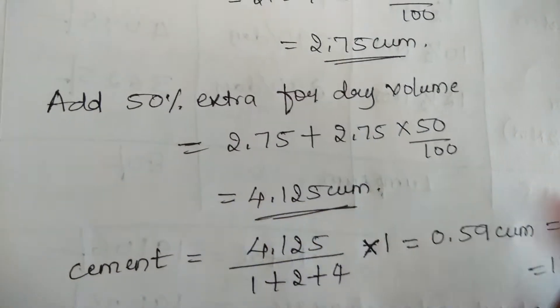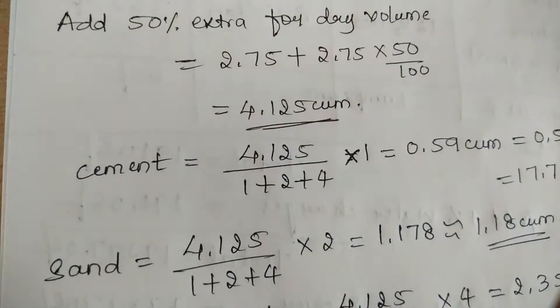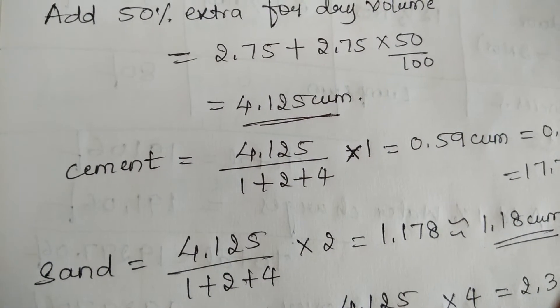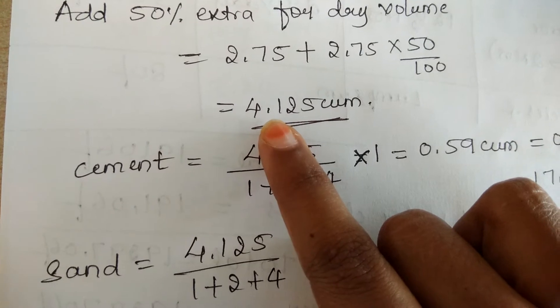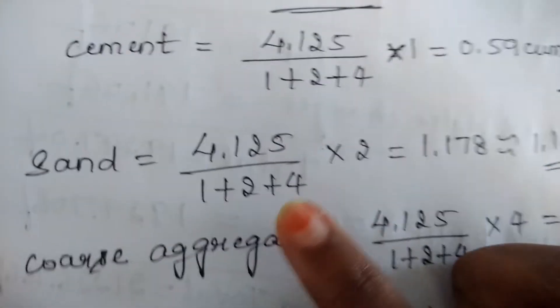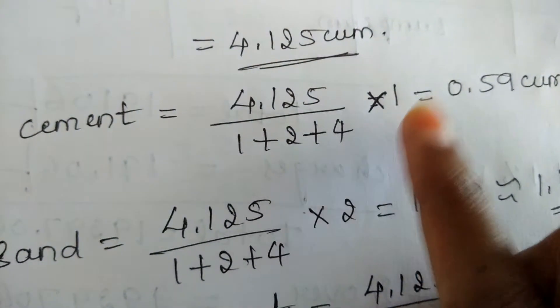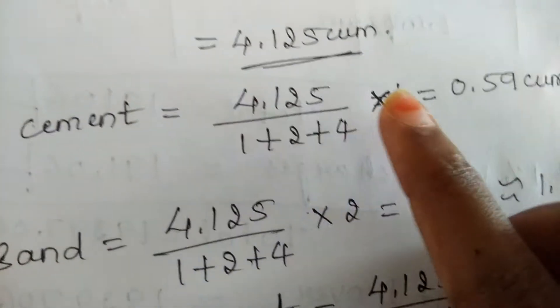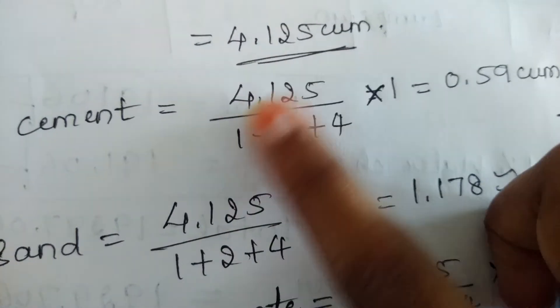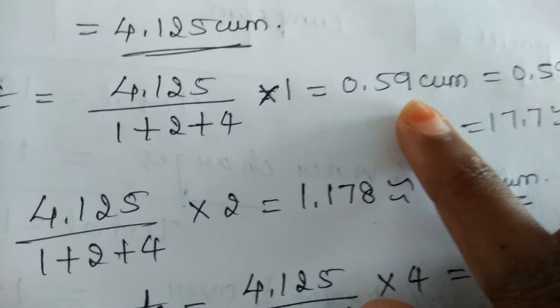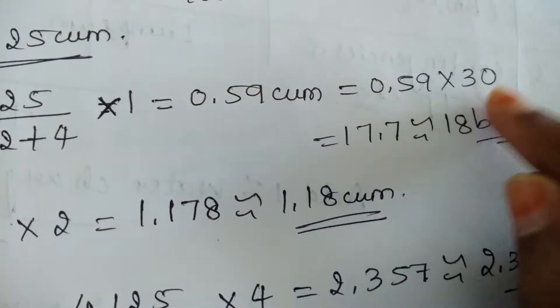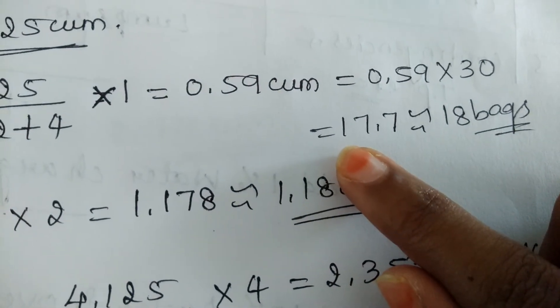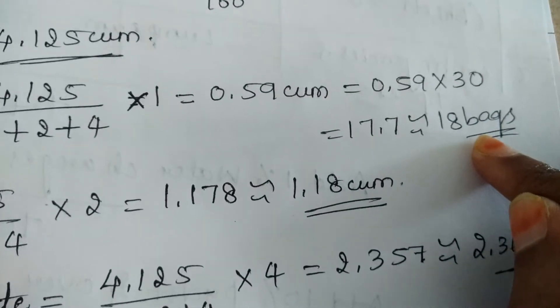Now for the dry concrete volume we have to find the materials quantity. Concrete consists of three materials: cement, sand, and coarse aggregate. Starting with cement, we take the dry volume 4.125 divided by the sum of the proportion 1+2+4, into the part of cement which is 1. On simplifying we will get a value of 0.59 m³. We always take cement in terms of number of bags, so multiply by 30 to get 17.7 — approximately 18 bags of cement.